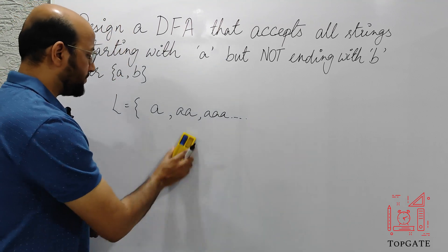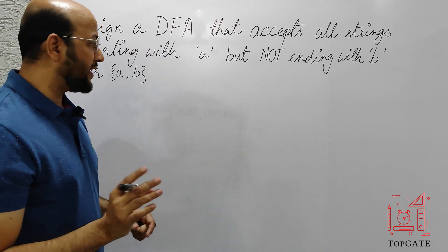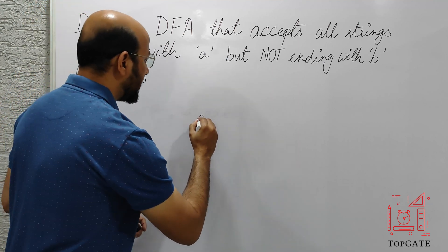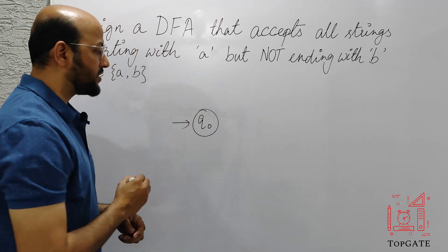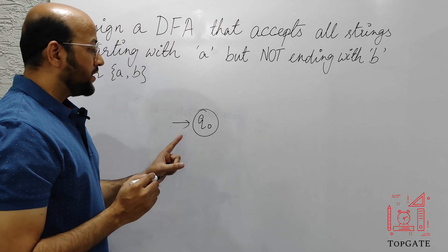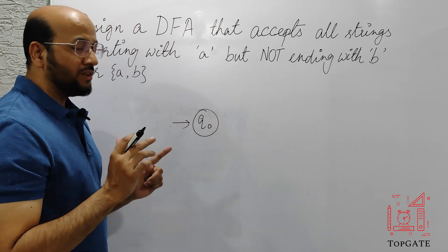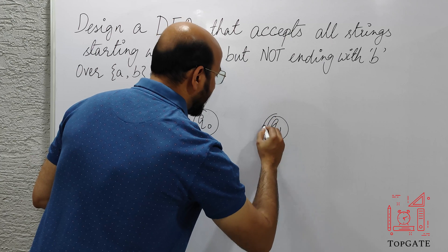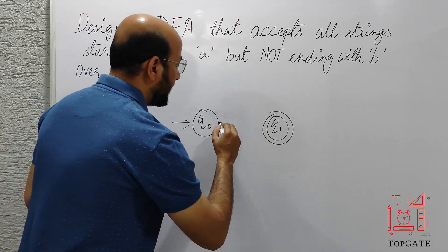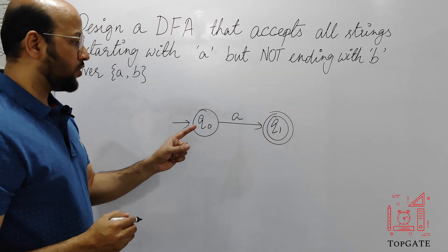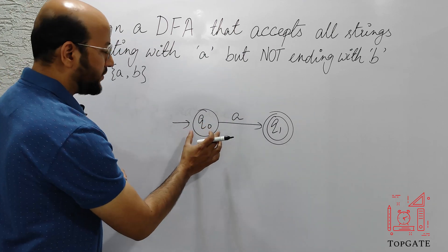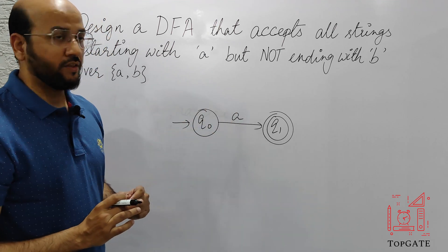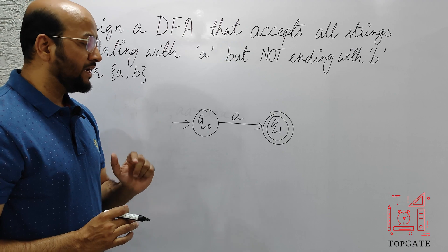So let's design the DFA. We'll start with some initial state Q0. Q0 is our initial state and we have to accept all the strings that start with A, so we'll make one more state Q1, make Q1 as the final state, and add a transition of A from Q0 to Q1. This DFA is now generating the string A — the shortest possible string for this particular DFA.